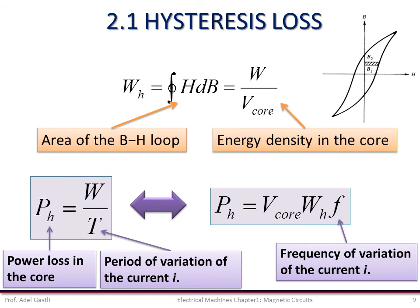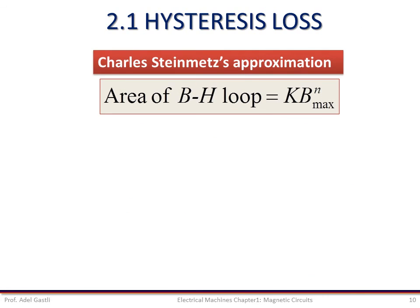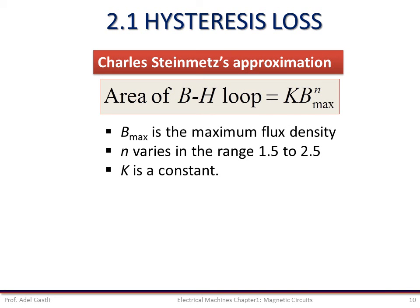Note that it is difficult to evaluate the area of the hysteresis loop because the BH characteristic is nonlinear and multivalued, and there is no simple mathematical expression that can describe this loop. However, Charles Steinmetz of the General Electric Company, who performed a large number of experiments, found that the magnetic material used in most electrical machines could be approximated by a relation for the hysteresis area. The approximate area of the BH loop is equal to k multiplied by Bmax to the power n, where Bmax is the maximum flux density, n varies in the range of 1.5 to 2.5, and k is a constant. Both n and k can be empirically determined.